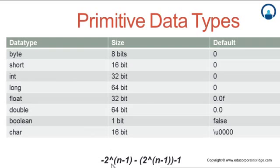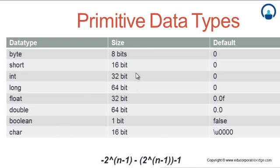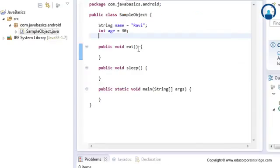Let's apply the range formula on byte. Here 'n' signifies the number of bits — a byte has 8 bits, so the range is from -2^(n-1) to 2^(n-1) - 1. With n=8, that's -2^7 to 2^7 - 1, which comes to -128 to 127. So the byte data type can store values from -128 to 127. You can calculate the range similarly for all other data types. Let's use these variables in code — we used int and we can use byte the same way.